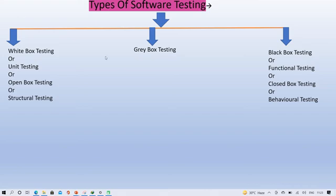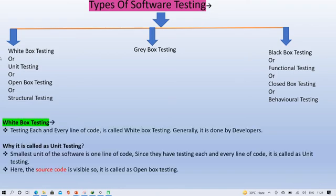Today we will discuss White Box Testing. White Box Testing means testing each and every line of code, and it is generally done by developers. They write the program and test each and every line of code — that's why it is called White Box Testing. The smallest unit of software is one line of code, so since they are testing each and every line it is also called Unit Testing. Since the source code is visible, it is also called Open Box Testing.